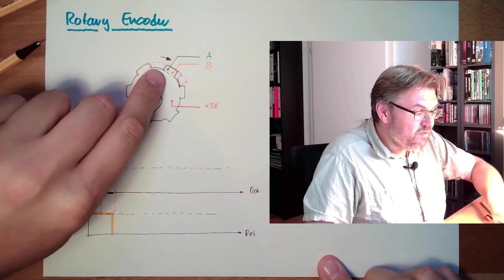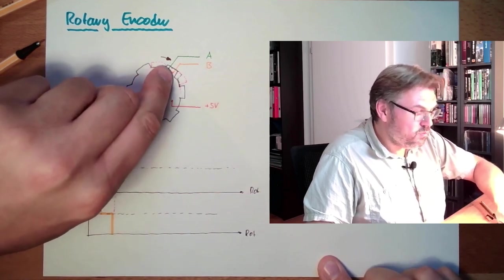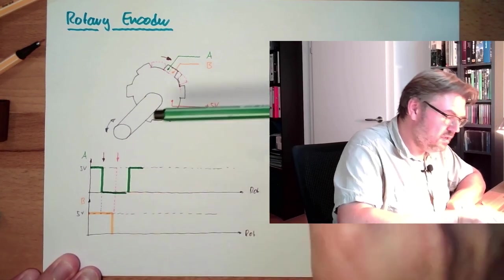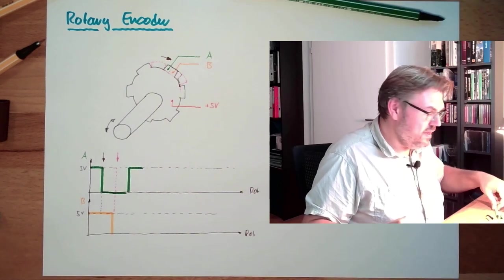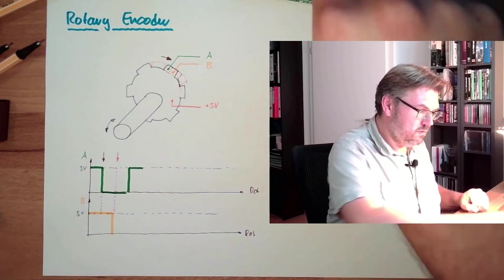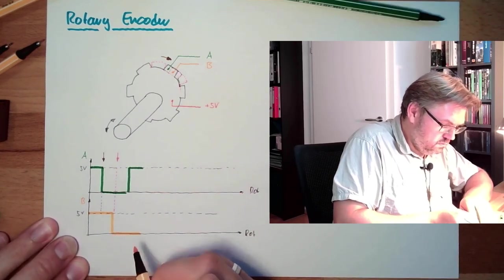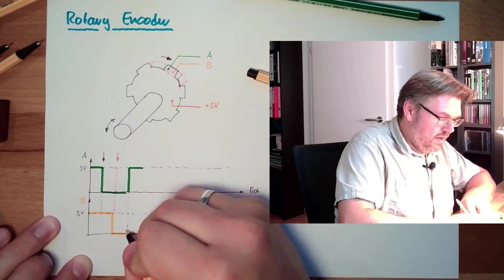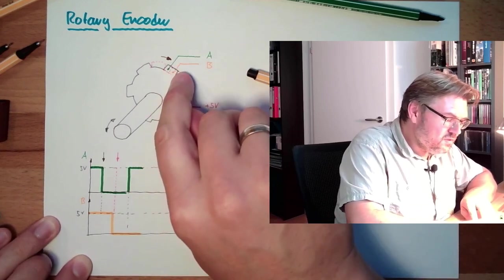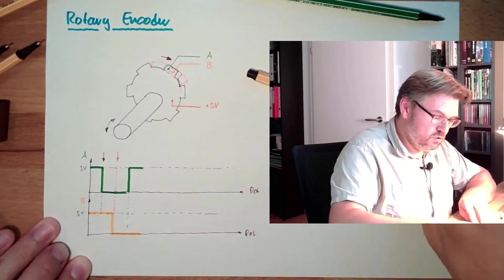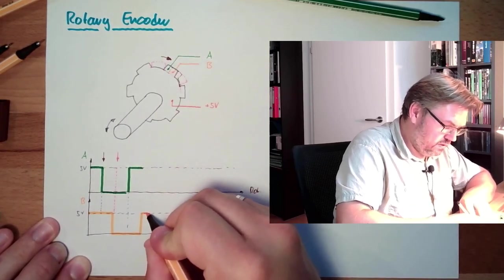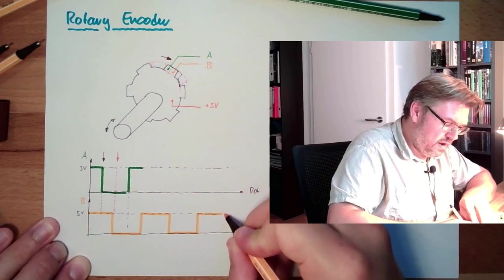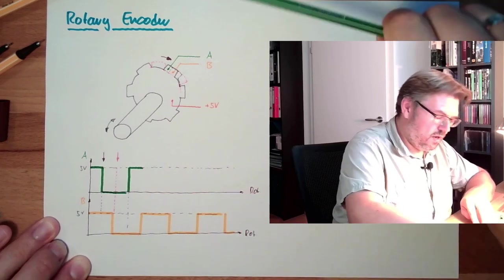If we turn it a little bit further. A is the first one to touch. So here A will then again switch to 5 volts. B will stay down. Until this tooth is also touching B, then B will also change to plus 5 volts. And this is how this will look like if we are turning it counterclockwise.